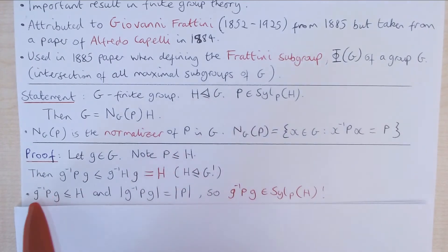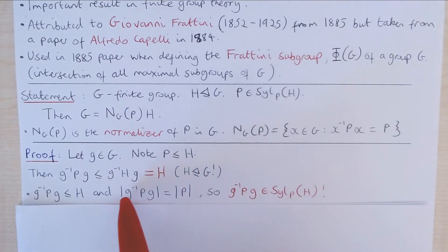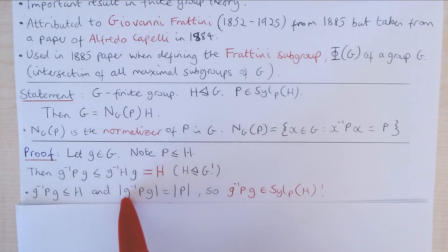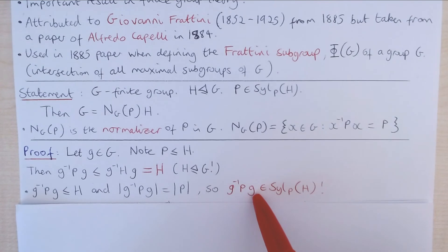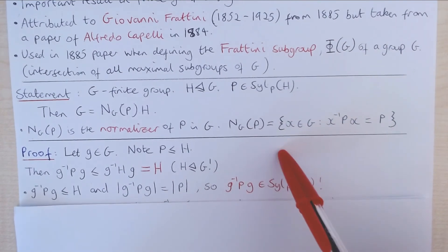So we have the subgroup G inverse P G is a subgroup of H, and it has the same size as P because conjugation is one to one. Therefore, the subgroup G inverse P G of H is actually a Sylow P subgroup of H.